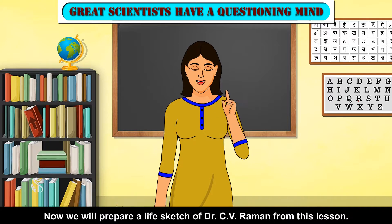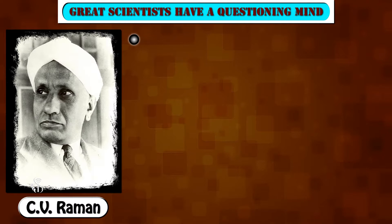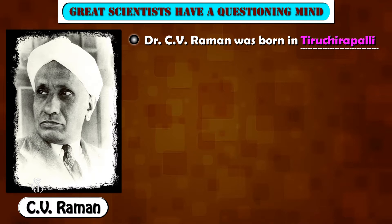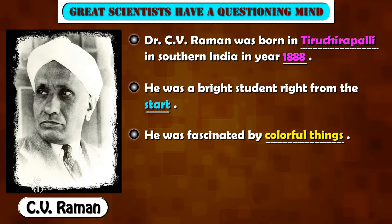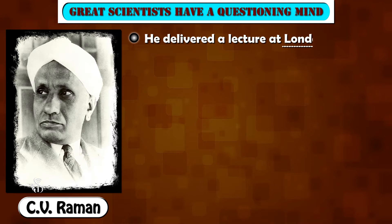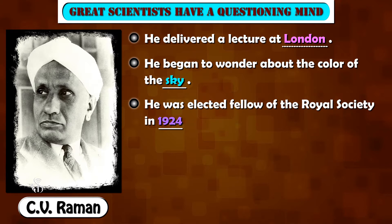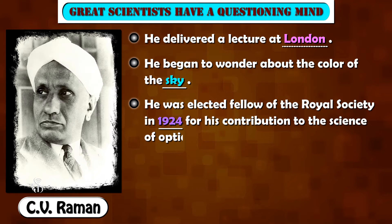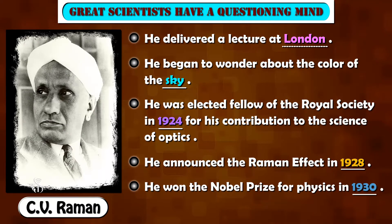Now we will prepare a live sketch of Dr. C. V. Raman from this lesson. Dr. C. V. Raman was born in Tiruchirapalli in southern India in 1888. He was a bright student right from the start. He was fascinated by colourful things and was interested in optical science and acoustics. He delivered a lecture at London and began to wonder about the colour of the sky. He was elected Fellow of the Royal Society in 1924 for his contribution to the science of optics. He announced the Raman effect in 1928 and won the Nobel Prize for Physics in 1930.